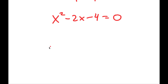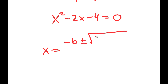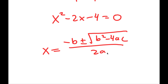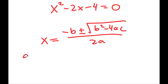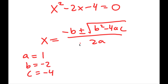Now to solve this I'm going to use the quadratic formula, which is negative b plus or minus the square root of b squared minus 4ac all over 2a. So in this case a is 1, b is negative 2, and c is negative 4.